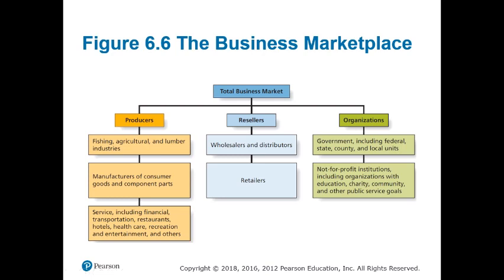Resellers are the second category. Resellers are entities or participants in supply chains or distribution channels. For example, manufacturers of laundry machines will distribute and sell their products through retailers — resellers like Walmart or Home Depot. These channels of distribution include wholesalers, distributors, and retailers.